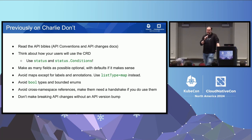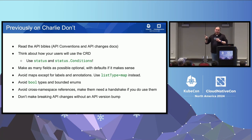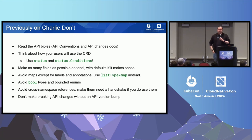Previously on Charlie Don't, in my previous talk, I covered a bunch of things about API design principles. I don't have time to go into them now, but maybe some of these will be clearer after this talk, because one of the reasons you design things the way I described is to make changes easier. Read the API Bibles — the API Conventions and API Changes doc. Think about how your users will use the CRD. Use status and status conditions. Make as many fields as possible optional with defaults. Avoid maps except for labels and annotations. Use list type map instead. Avoid bool types and bounded enums. Avoid cross-namespace references, and make them need a handshake if you do use them. And don't make breaking changes without an API version bump.